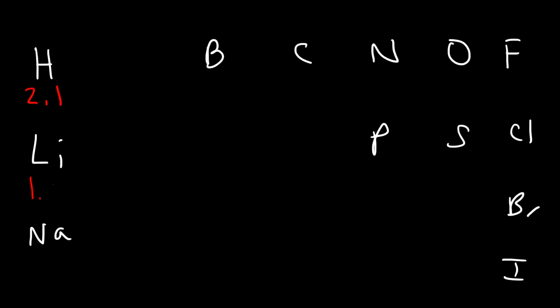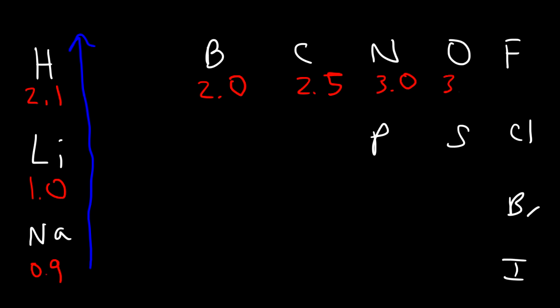The electronegativity value for hydrogen is 2.1, for lithium it's 1.0, and for sodium it's 0.9. Notice that electronegativity increases as you go up across the periodic table. As for going to the right: boron is about 2.0, carbon is 2.5, nitrogen is 3.0, oxygen is 3.5, and fluorine is 4.0.